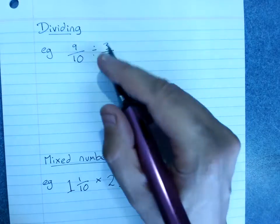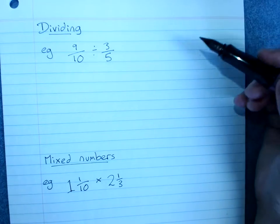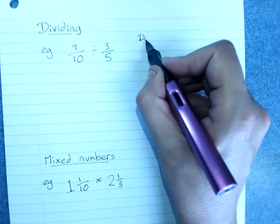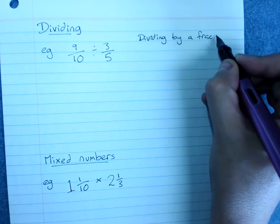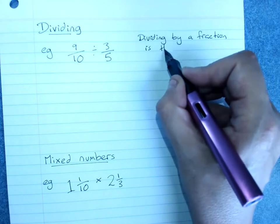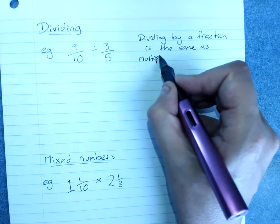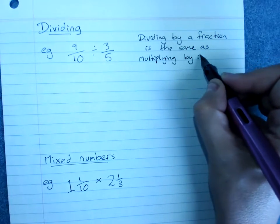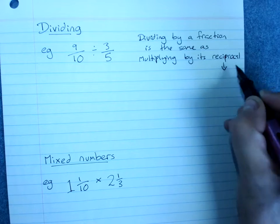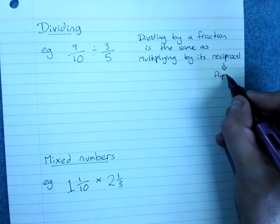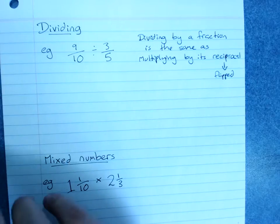Dividing is actually quite tricky and so mathematicians came up with a trick that dividing by a fraction is the same as multiplying by its reciprocal. And the reciprocal just means flipped fraction. So the reciprocal of 3 over 5 is 5 over 3.